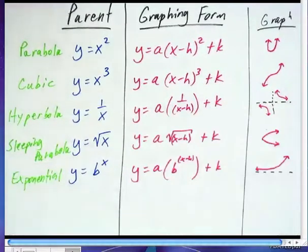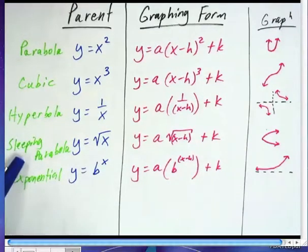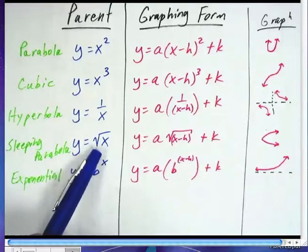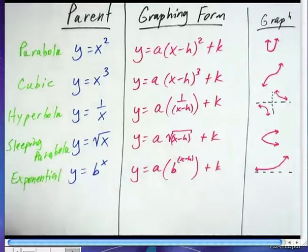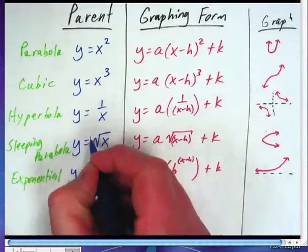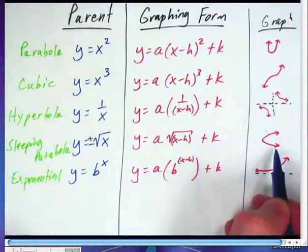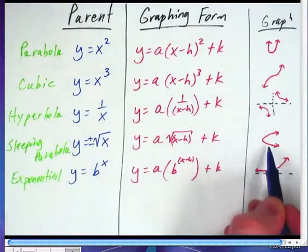They all have the x minus h's, the plus k's on the outside, and that moves horizontally and vertically as you're going about this. Now the sleeping parabola is next, and the sleeping parabola comes from this equation. It is not a function. Once you graph the plus and minus of it, it's going to fail the vertical line test, and so then you've got a sideways parabola.